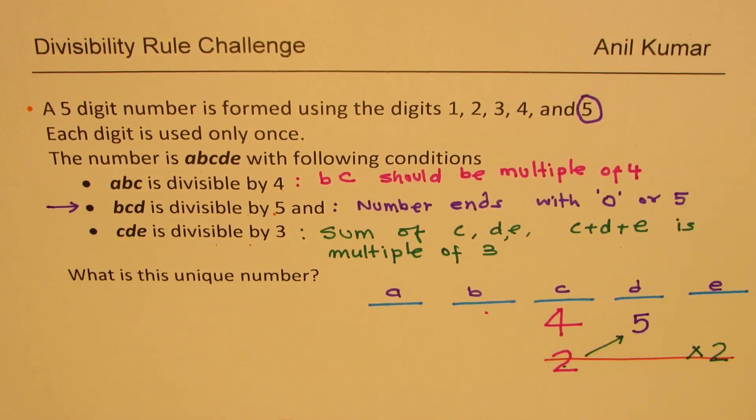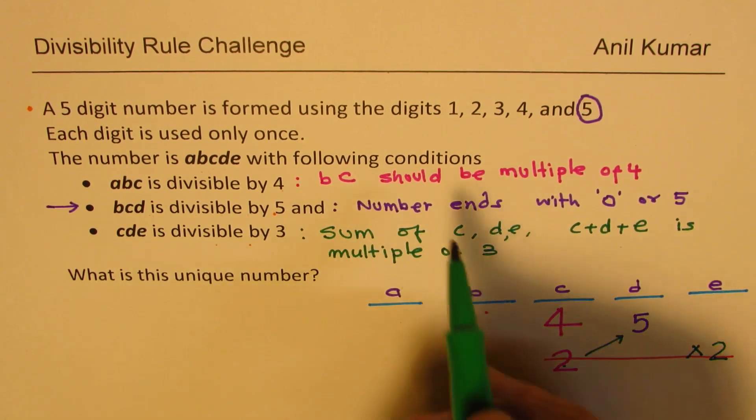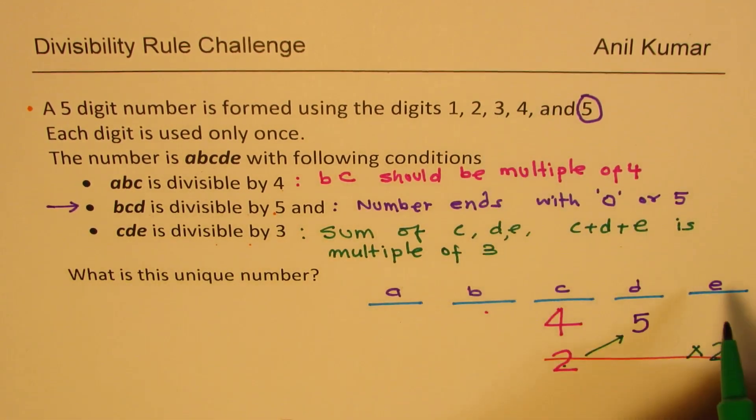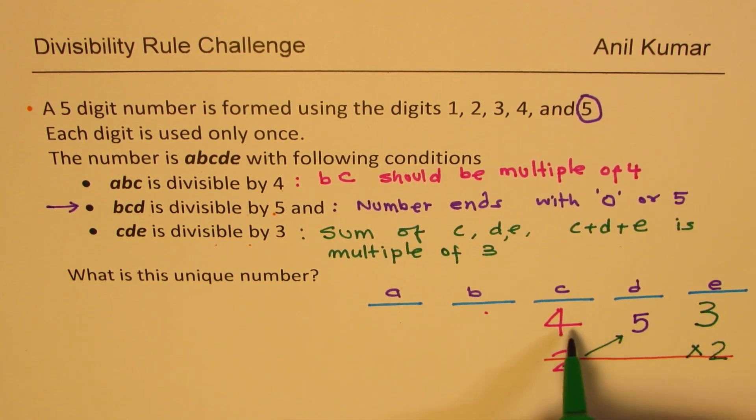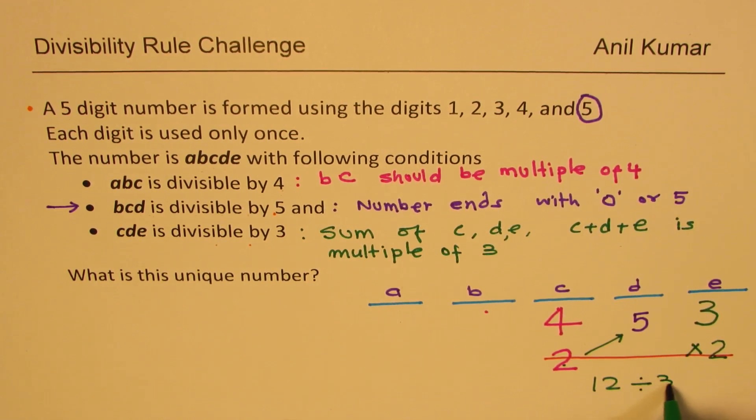Now it is simple. So 4 plus 5 is 9. Multiple of 3 means I could use now 3. 9 plus 3 is 12. So this number should be 3. You can divide 12 by 3, you get 4. So that works.